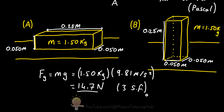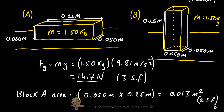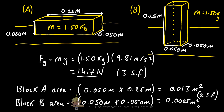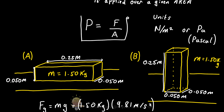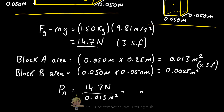What about the area? For block A, this block is distributing the 14.7 newton force over an area of 0.013 meters squared. This is a larger area than the contact area of block B, so for the same force the pressure will be lower. The pressure of block A is 14.7 newtons divided by 0.013 meters squared, giving a pressure of 1,200 pascals to two significant figures.